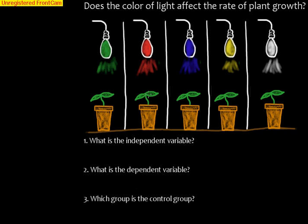Let's look at experiments by taking a look at this example: Does the color of light affect the rate of plant growth? You can see how this is set up — we have different plants here, and they're being exposed to different color lights. They're trying to see if the light affects the rate or speed of the plant growth.